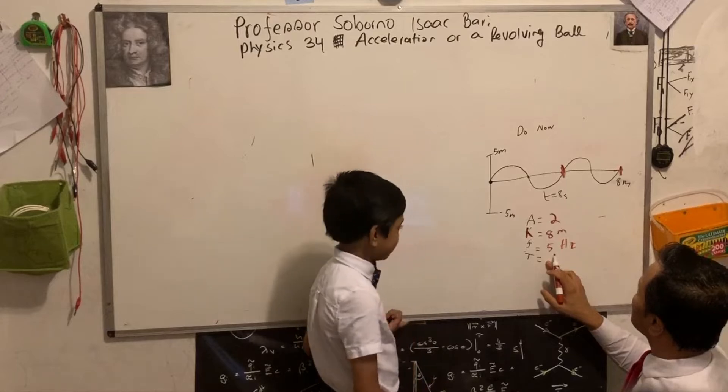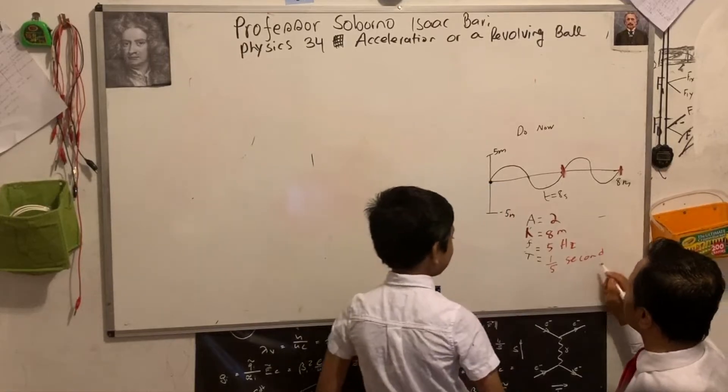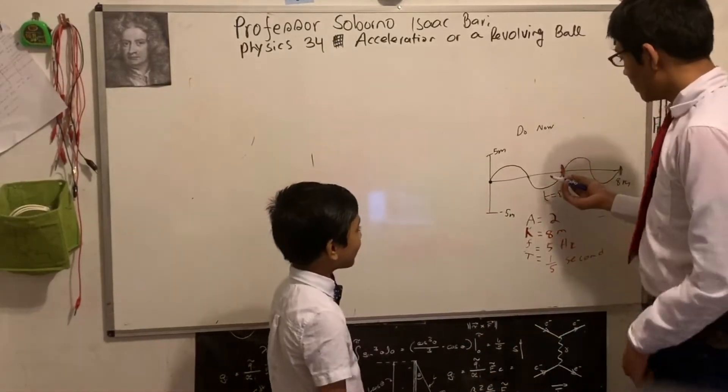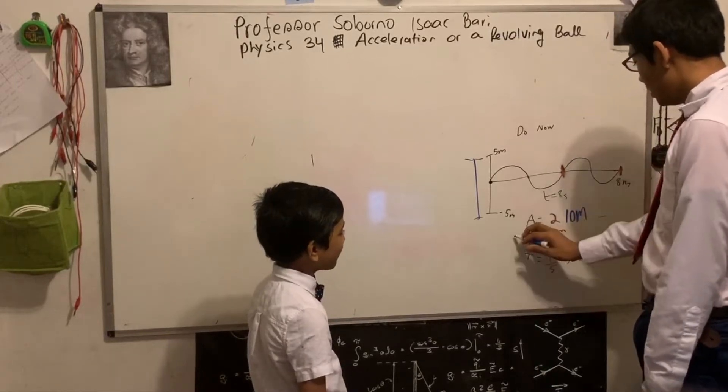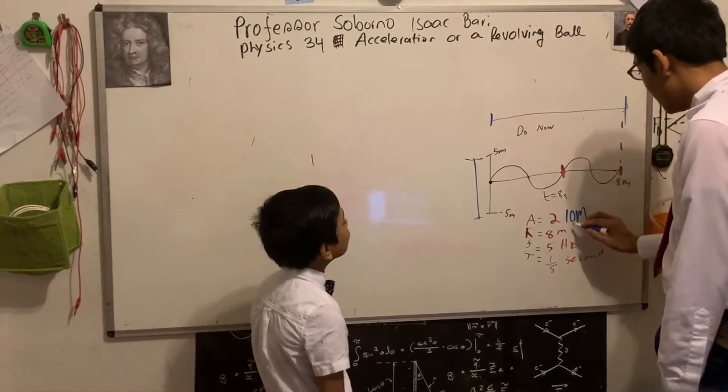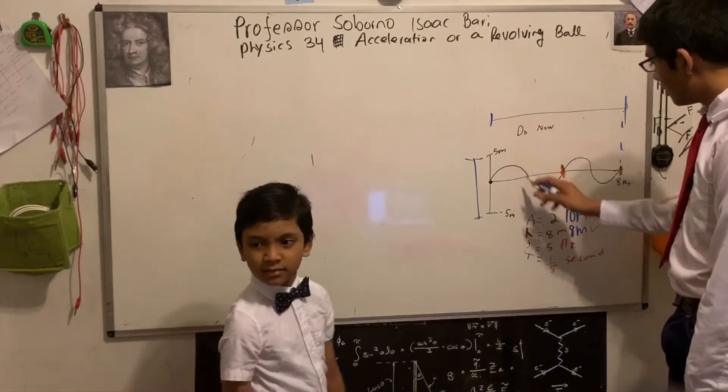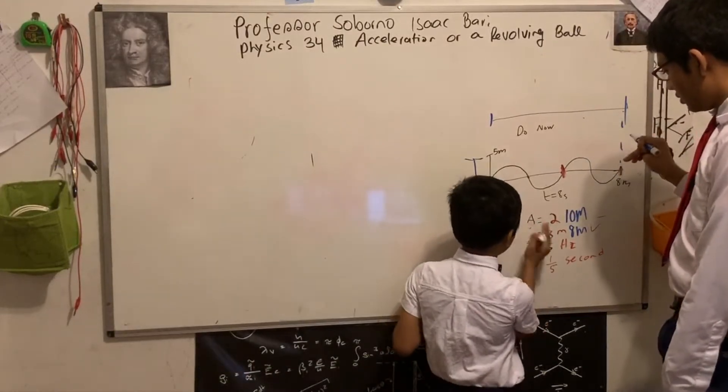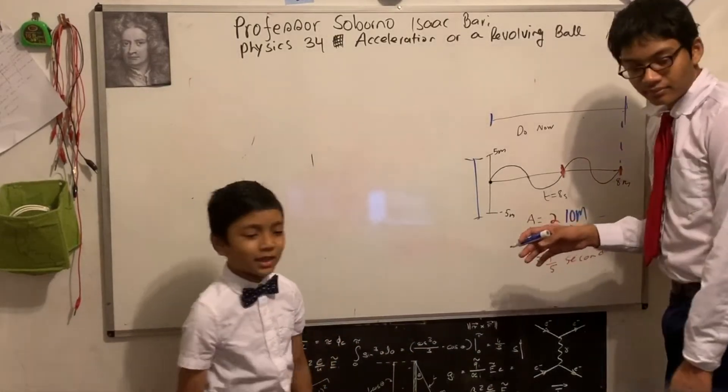Can I try? Okay. Amplitude is how big it is - easy. Five minus negative five equals ten meters. Wavelength is going to be the size, easy, eight meters. I think Professor was right. My wavelength symbol is bad, but it doesn't matter how he writes. It only matters how much effort you take.